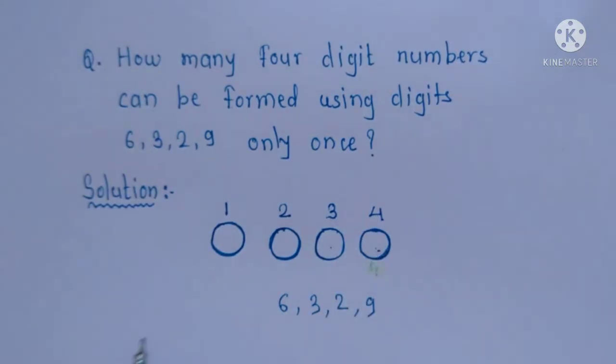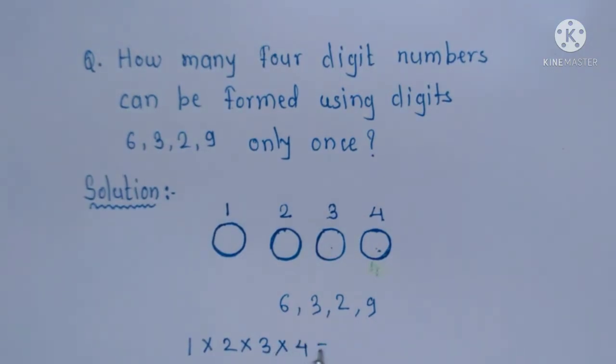Now we'll take the multiplication of all these. So total ways are 1 × 2 × 3 × 4, which is equal to 24. So we can form 24 numbers using the digits 6, 3, 2, 9 without repetition. Thank you.